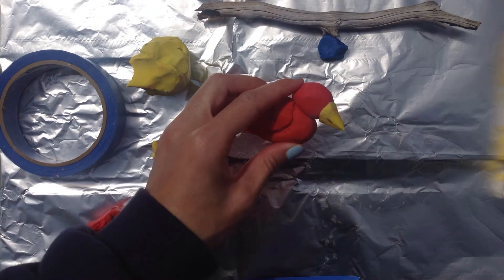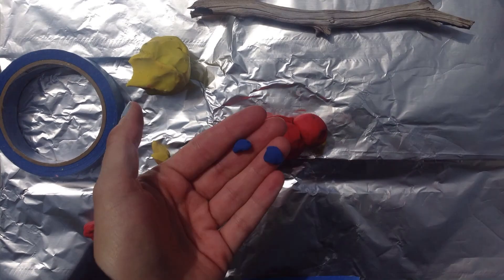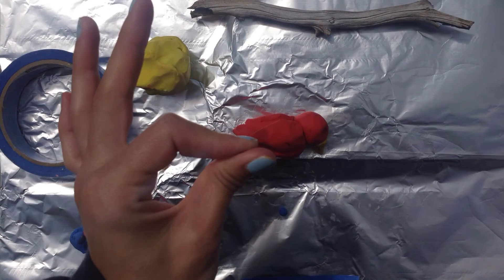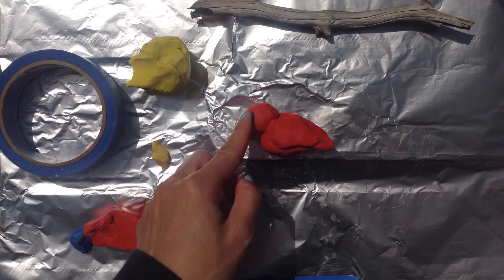Make two indents with your finger for the eyes. Squish these round balls flat to make eyes. You can make them smaller if you would like.